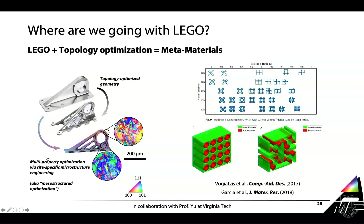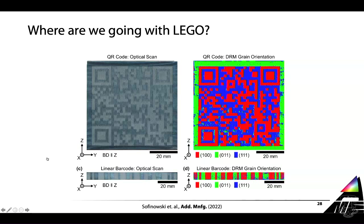We are also looking at the mechanical properties of these complex Lego microstructures and finding interesting results, but I don't have time to go through them. Instead, I want to spend one more slide talking about unconventional applications of these strategies. Here we have used Lego to encode a QR code in a block of steel. If you take out your mobile phone and try to scan that, you will be redirected to my group website. This block is way too big to run EBSD on, so we use DRM instead - that's a DRM orientation map that assigns colors according to the EBSD color scheme as a function of crystal orientation of stainless steel 316L.